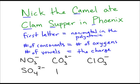Last but not least, the P in 'Phoenix' is used for one of the polyatomics. We have four consonants, so we've got four oxygen atoms. And there are three vowels in 'Phoenix,' so the charge is three minus — that gives us our phosphate polyatomic. So that's a quick way to help you remember nitrate, carbonate, chlorate, sulfate, and phosphate. If you can remember those polyatomics, it makes your life a little bit easier.